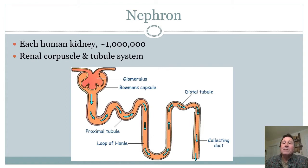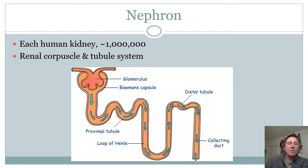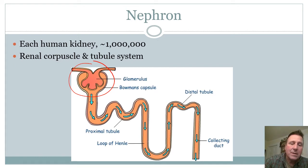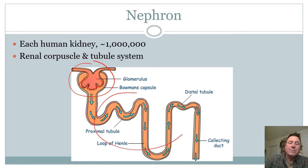The functional unit of the kidney is a nephron. You have about a million in each kidney. It consists of a renal corpuscle — the ball of capillaries — where blood is filtered across a membrane, and a tube system. Together these make up a nephron.